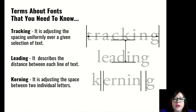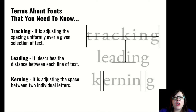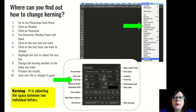Kerning has to do with the space between two specific individual letters. Leading is the distance between each line of text, and kerning is the space between two individual letters. In Photoshop, Adobe Illustrator, and many other Adobe programs, you have control to change all of these things when designing in the software and using the text tools. You can find how to change these things in your character panel — to turn it on, you go to Window and click on Character, and then it pops up and you will see that there is a space for kerning, leading, and tracking and you have the ability to change all of them.